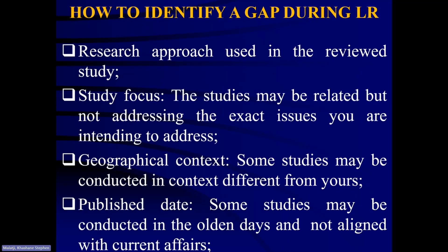Let's look at how one can identify a gap during the process of writing a literature review. You can use the research approach to identify the gap. Maybe the study you are reviewing used a quantitative approach and your current study is going to use a qualitative approach. That can be used as a gap because quantitative and qualitative approaches are completely different. Therefore, you can say even though this study is related to mine, I'm going to use qualitative as opposed to generalizing the findings through the quantitative approach.